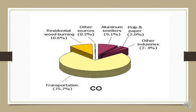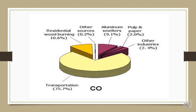In this picture, different sources of carbon monoxide are shown. Transportation contributes the maximum — about 75.7% of CO generation. Residential wood burning contributes 10.6%, other sources 0.2%, aluminium smelters 9.1%, pulp and paper industry 2%, and other industries about 2.4%. Transportation contributes the most because incomplete combustion takes place in engines.